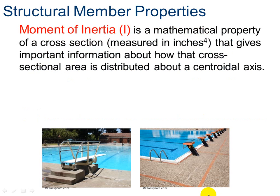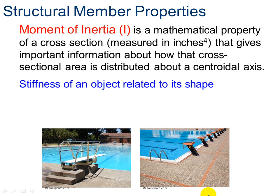What are structural member properties? Well, the main thing we're going to focus on in this lesson is moment of inertia, represented with the capital letter I. It's a mathematical property of a cross-section, measured in inches to the fourth power, that gives important information about how that area is distributed about a centroidal axis. Really what it is, is the stiffness of an object related to its shape.